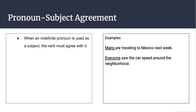When an indefinite pronoun is used as a subject, the verb has to agree with it. Here's our example for that: many are traveling to Mexico next week. Our indefinite pronoun is many, and because we don't know what it is or how many, we have to use the word are. Many are traveling to Mexico next week. Then this one: everyone saw the car speed around the neighborhood. In this case, we would use the word saw instead of sees.